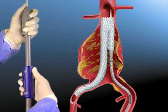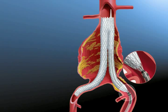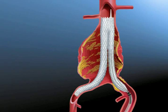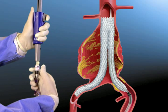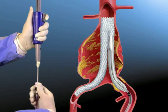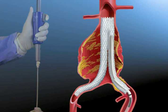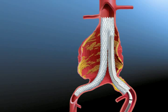Continue deployment of the stent graft until the graft cover is just below the distal radiopaque marker on the Accelerant Delivery System. To remove the delivery system, depress the quick disconnect button to retract the tapered tip and runners. Use continuous fluoroscopy and watch the top end of the AneuRx stent graft while slowly pulling back the tapered tip and runners into the graft cover of the delivery catheter.